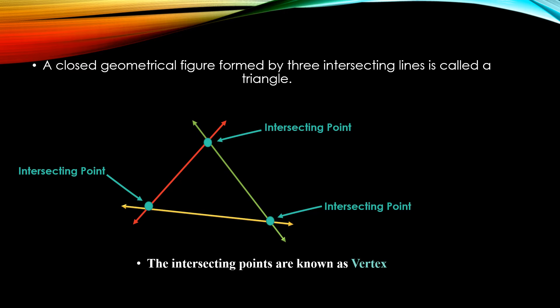A single intersecting point is called a vertex, and you can find three vertices in a triangle.